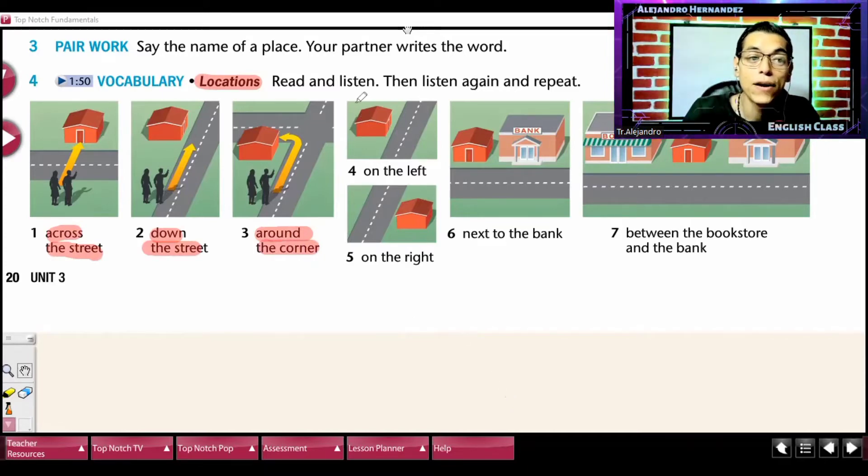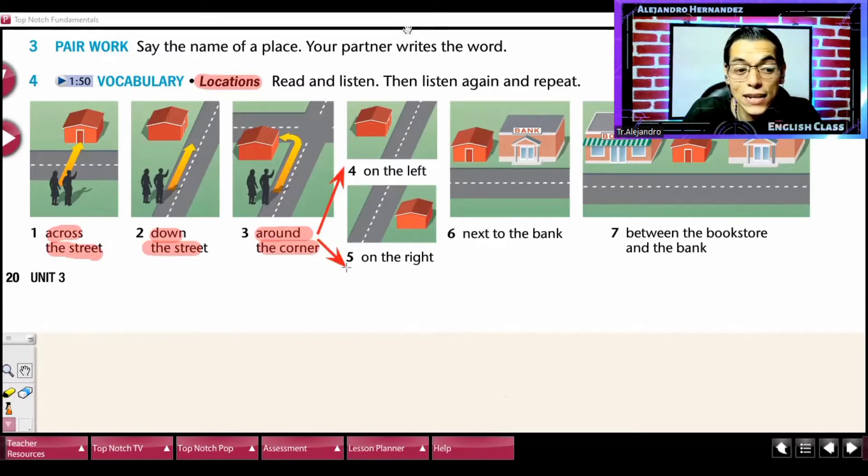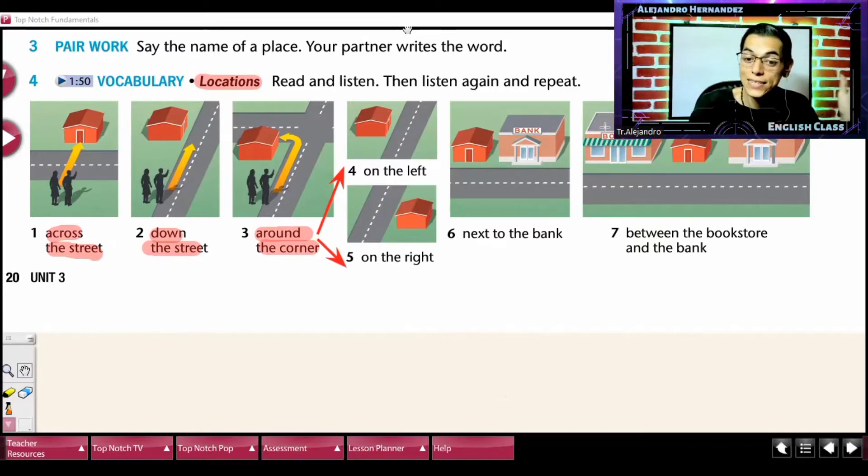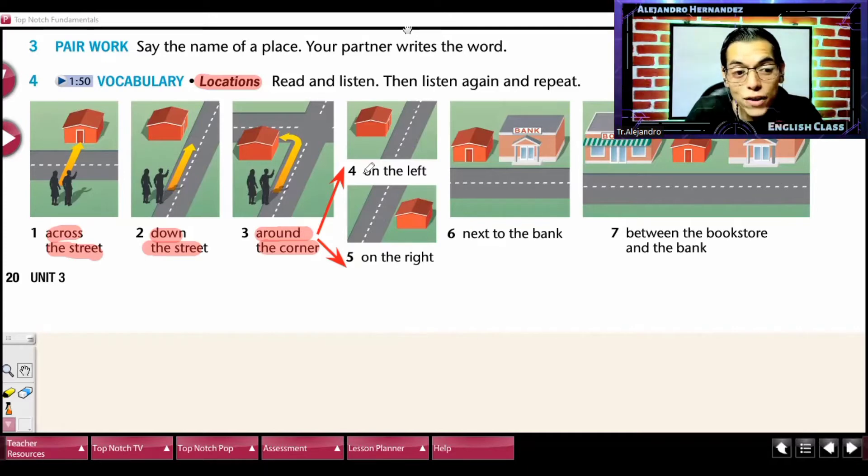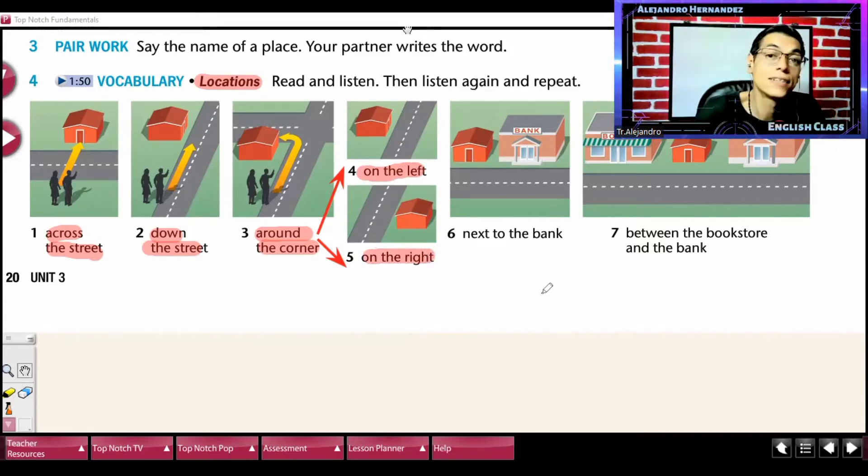Pero recuerden, chicos, que dijimos que podemos combinar lo que es el 3 and 4 or 3 and 5, dependiendo si vas a girar a la izquierda o vas a girar a la derecha. So, around the corner, on the left, si va a ser hacia la izquierda. Around the corner, on the right, si va a ser a la derecha. Correcto.